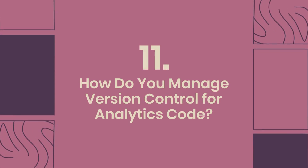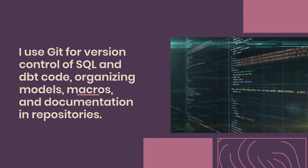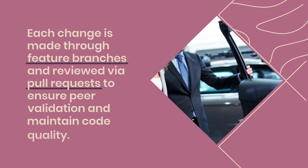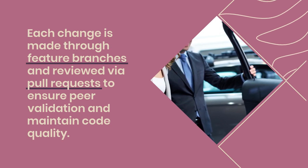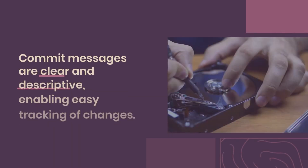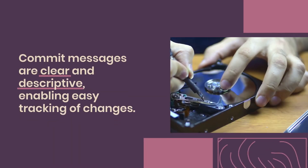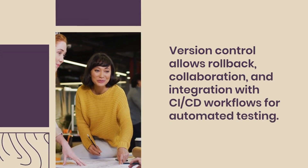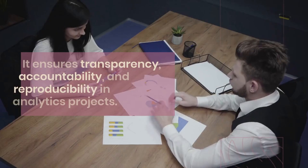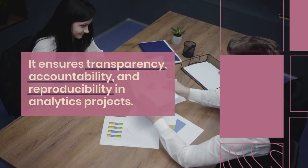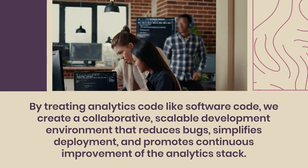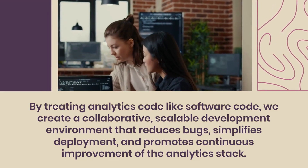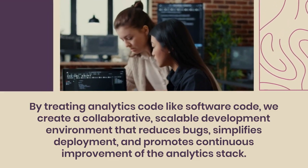Question 11: How do you manage version control for analytics code? I use Git for version control of SQL and DBT code, organizing models, macros, and documentation in repositories. Each change is made through feature branches and reviewed via pull requests to ensure peer validation and maintain code quality. Commit messages are clear and descriptive, enabling easy tracking of changes. Version control allows rollback, collaboration, and integration with CI/CD workflows for automated testing. It ensures transparency, accountability, and reproducibility in analytics projects. By treating analytics code like software code, we create a collaborative, scalable development environment that reduces bugs, simplifies deployment, and promotes continuous improvement of the analytics stack.